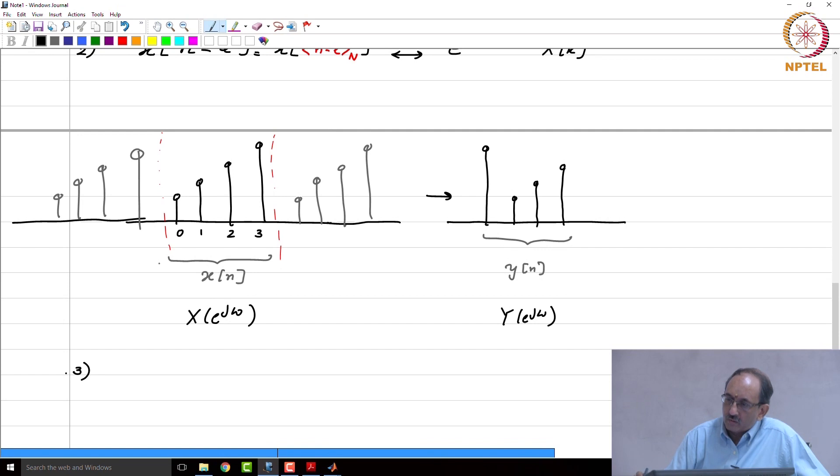The counterpart to the shift in the time domain is modulation. We have e to the j 2 pi k l N by cap N times x of n, this is nothing but x of k minus l. So, this is the counterpart of if you multiply by e to the j omega naught n, the DTFT will be x of omega minus omega naught. That is exactly similar to what is happening here. After all, you are going to sample the modulated signal's spectrum. So, this is what you will get, but again the transform is also periodic and hence this is really k minus l mod N.